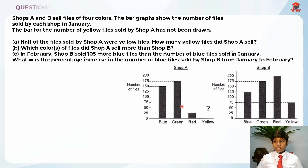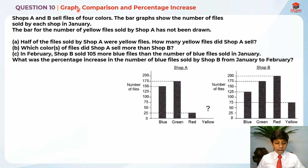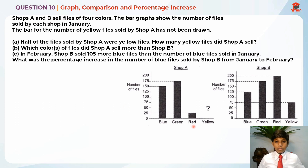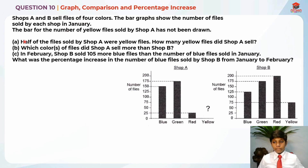This is question 10 and this question is testing us on graph, comparison and percentage increase. Let's read the question for part A first. Shops A and B sell files in four colors: blue, green, red and yellow. The bar graphs show the number of files sold by each shop in January. The bar for the number of yellow files sold by shop A has not been drawn — that is why there's a mystery mark over here.